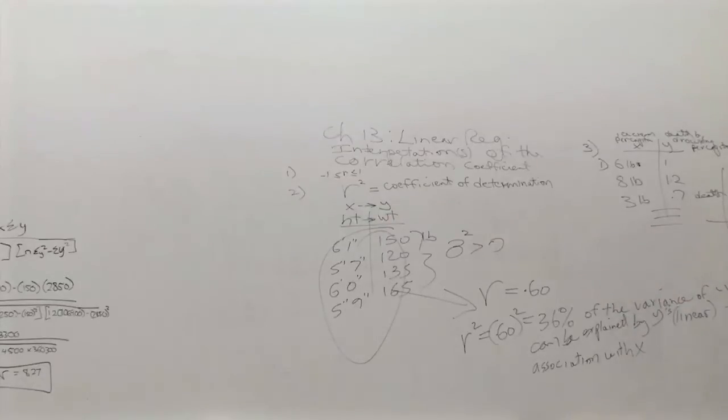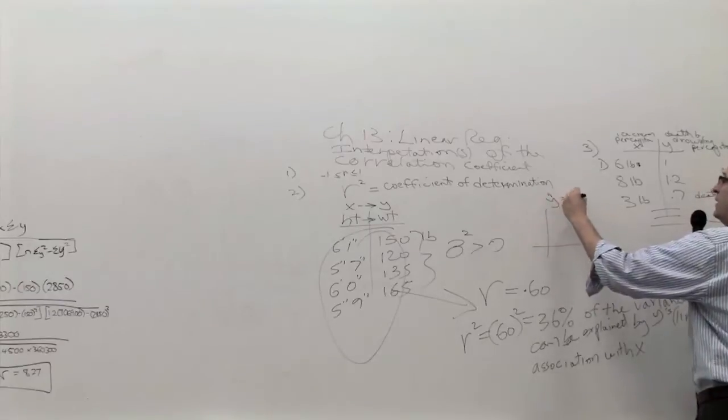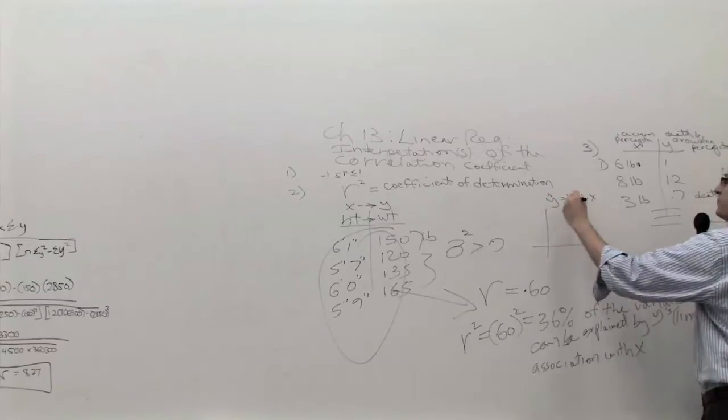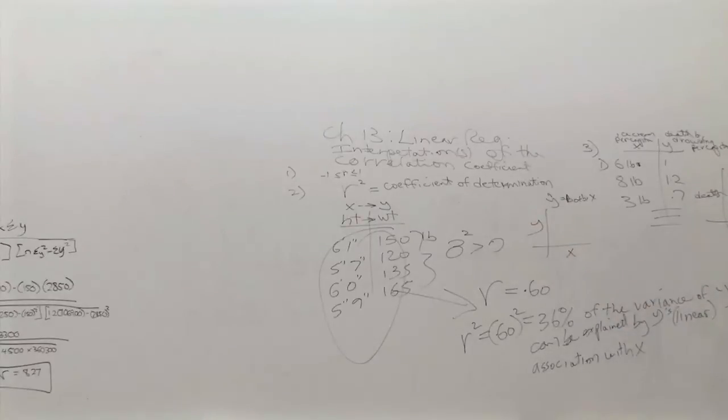Or maybe it's the opposite. When you calculate Y equals B0 plus B1X, it's one of the small challenges of the problem. If you change the X and Y around, you're going to get a different answer.